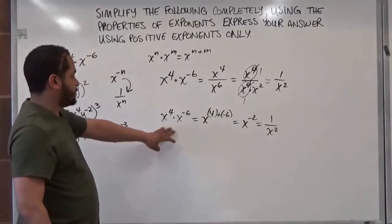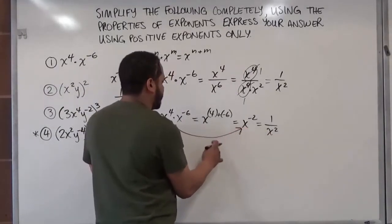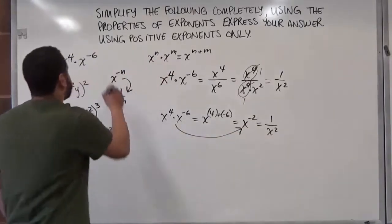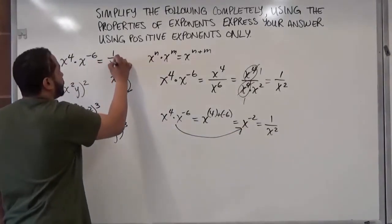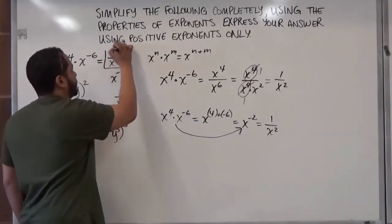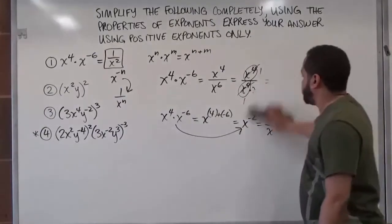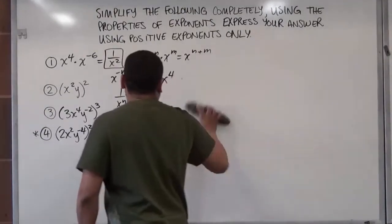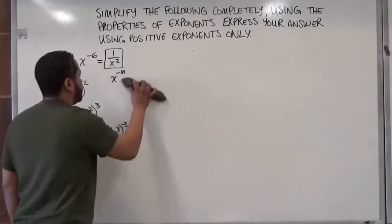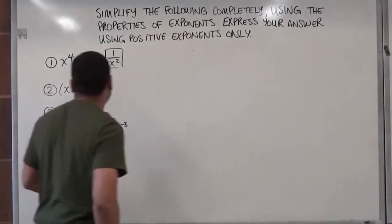You can cut a lot of these steps out — just go from the expression directly to x to the negative second, then move it to the denominator. Our solution for the first problem is one over x squared, because we cannot have any negative exponents in the solution. Be sure you pause and rewind this video if you're having trouble understanding. Just rinse, wash, and repeat. So let's move on to number two.